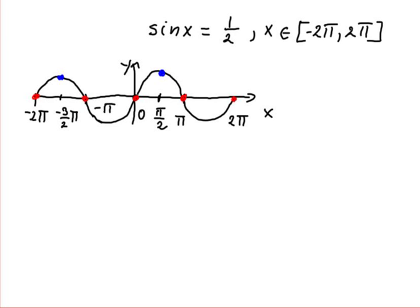All right, sin x is equal to 1 over 2 on the interval negative 2 pi to 2 pi. This time we will be equating sin x with 1 over 2. So let's imagine a straight horizontal line that will cut through this entire graph like so. This is a horizontal line with the following equation, y is equal to 1 over 2.